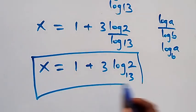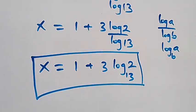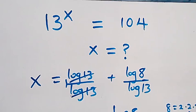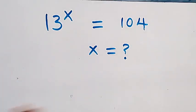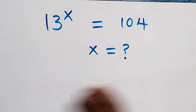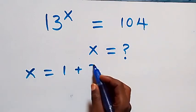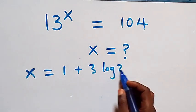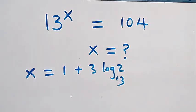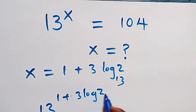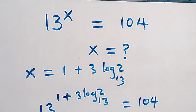So we have the solution to this problem: x equals to 1 plus 3 log 2 to base 13. Now let's check if this satisfies the given problem. We substitute the value of x into the equation: 13 raised to power (1 plus 3 log 2 to base 13) equals to 104.